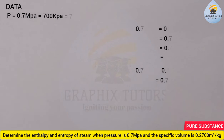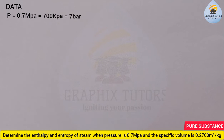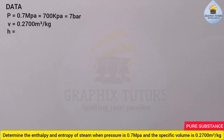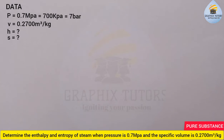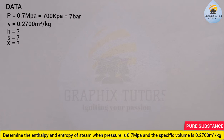We are given the specific volume to be 0.2700 meter cube per kilogram. We are asked to calculate the enthalpy and entropy. Before moving forward, we need to understand that to use the relationships for enthalpy or entropy, we need the dryness fraction. So we will calculate the dryness fraction first.